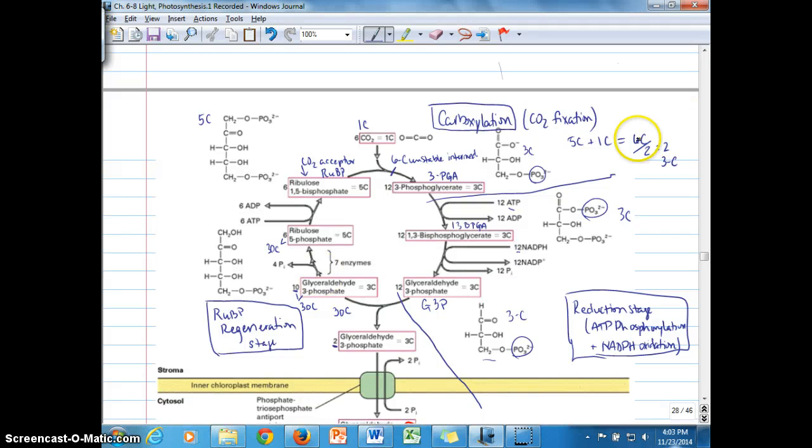So you can see we've been working on understanding the three different stages of the Calvin cycle involved in photosynthesis. We discussed carboxylation, which is where carbon dioxide becomes fixed to a ribulose 1,5-bisphosphate. That's the CO2 acceptor during CO2 fixation or carboxylation, resulting in the synthesis of 3-PGA. For every CO2 molecule entering the cycle, two times that amount of product is produced.